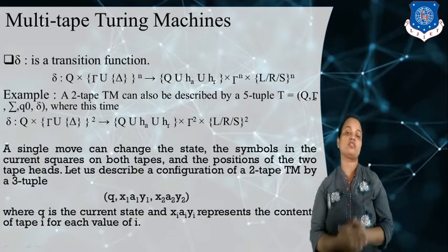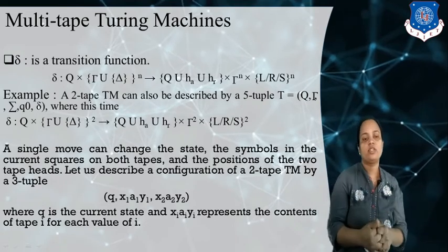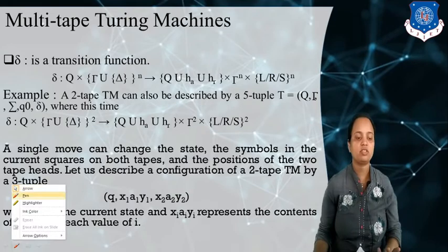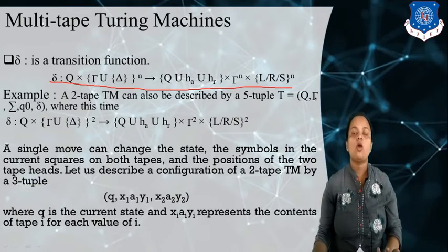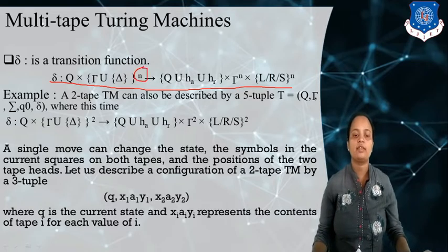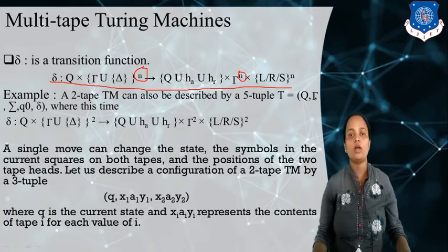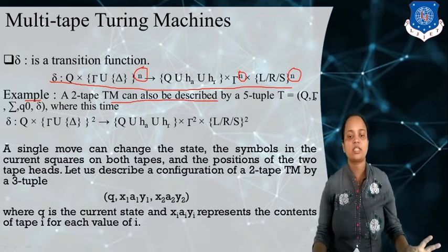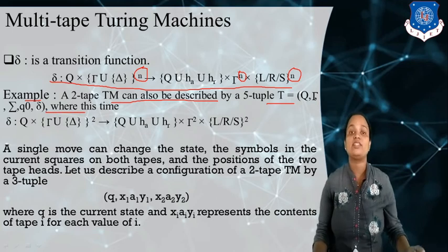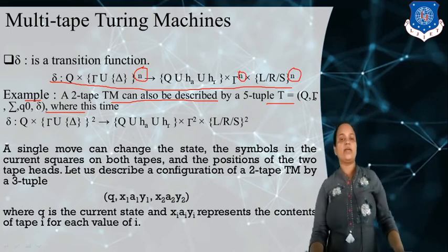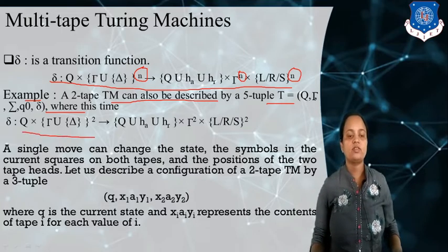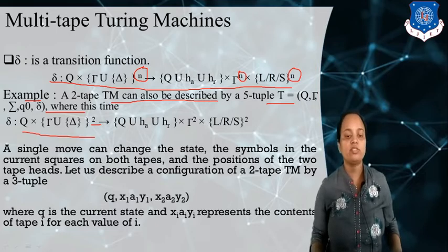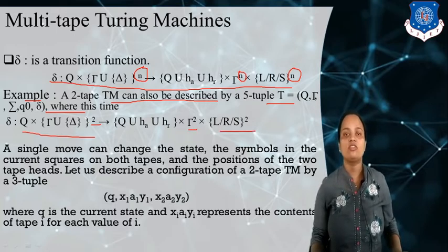How do we define the transition function for this kind of multi-tape Turing machine? For a multi-tape Turing machine, the transition function is defined similarly but with a parameter n, where n defines the number of tapes used. Suppose I want to define a two-tape Turing machine. In the transition function, I place n equals two, meaning we are going to read two inputs, write two alphabets in place of the inputs, and also move in two directions.